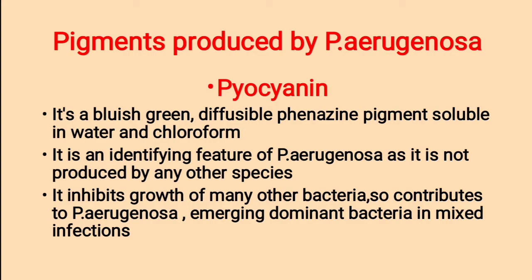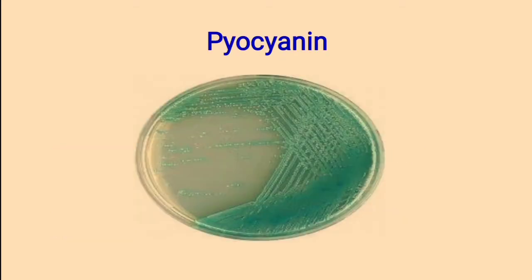Pigments produced by Pseudomonas aeruginosa — this is very important. The main types of pigments: First, Pyocyanin. It is a bluish-green diffusible phenazine pigment soluble in water and chloroform. It is an identifying feature of Pseudomonas aeruginosa as it is not produced by any other species. It inhibits growth of many other bacteria, contributing to Pseudomonas aeruginosa becoming the dominant bacteria in mixed infections. This is the colony showing Pyocyanin pigment.